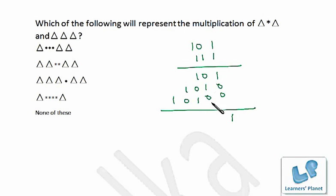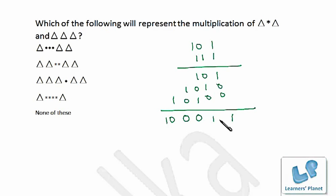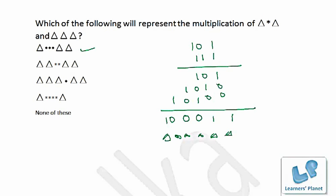Carrying out the binary multiplication: 101 × 111. Adding the partial products, we get carries where 1+1 = 10 in binary. The final result, expressed in delta and star notation, is delta-star-star-star-delta-delta — that is 10011 in binary, which equals 35 in decimal (5 × 7). If you know binary multiplication, this problem can be done in 30 to 40 seconds.